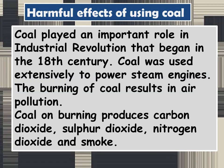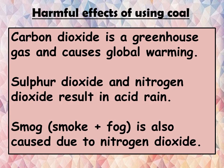Coal played an important role in the industrial revolution that began in the 18th century, and was used extensively to power steam engines. However, the burning of coal results in air pollution. Coal on burning produces harmful gases such as carbon dioxide, sulfur dioxide, nitrogen dioxide, and smoke. Carbon dioxide is a greenhouse gas and causes global warming. Sulfur dioxide and nitrogen dioxide result in acid rain, and smog — a mixture of smoke and fog — is also caused due to nitrogen dioxide.